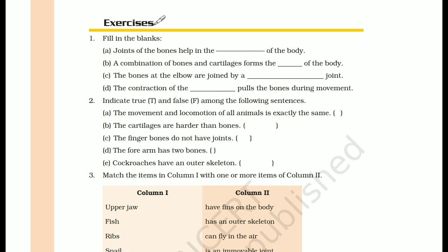Part (c): the bones at the elbow are joined by a dash joint. The answer is hinge joint. As we read in this chapter, a door also has a hinge joint, and so does our knee.